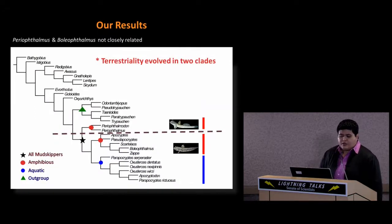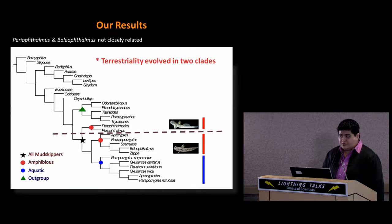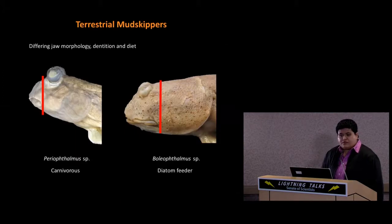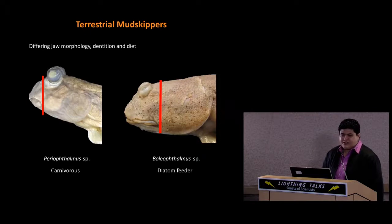Based on our dataset, terrestriality evolved twice within the mudskippers in two distinct clades. Periophthalmus and Boleophthalmus, the two most terrestrial mudskippers, are actually not closely related — in fact Boleophthalmus is more closely related to the aquatic mudskippers than to Periophthalmus. These two taxa are clearly different: they have differing jaw morphology, dentition, and diet. Periophthalmus have small mouths, are carnivorous, and have caninoid teeth, whereas Boleophthalmus have large mouths, are diatom-feeding, and have flattened or bicuspid teeth.